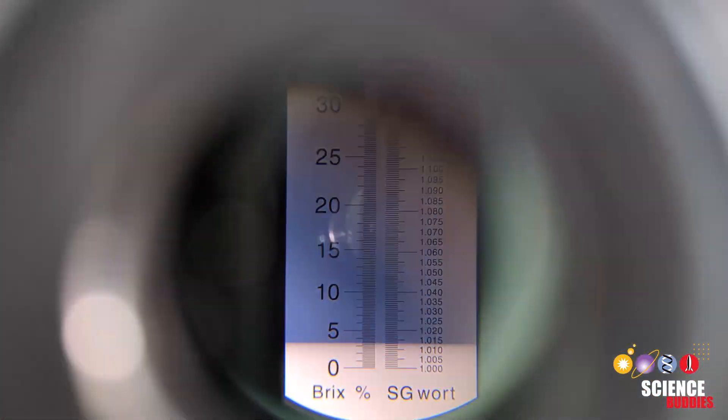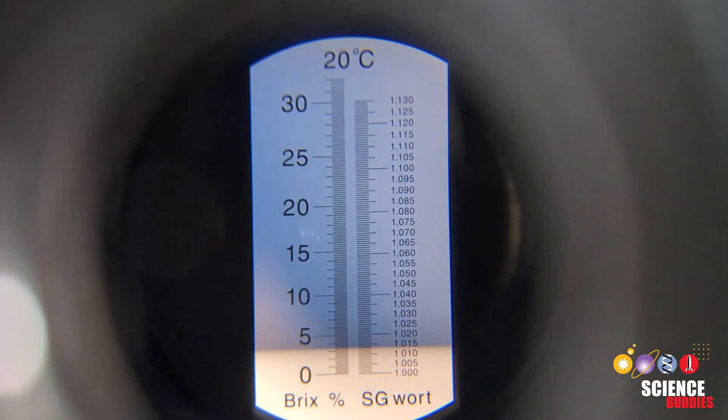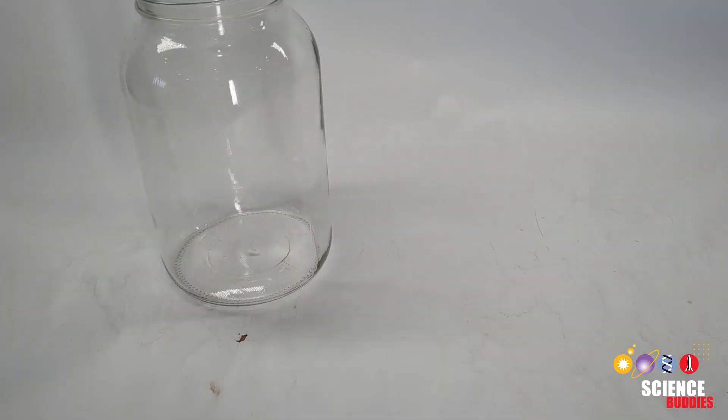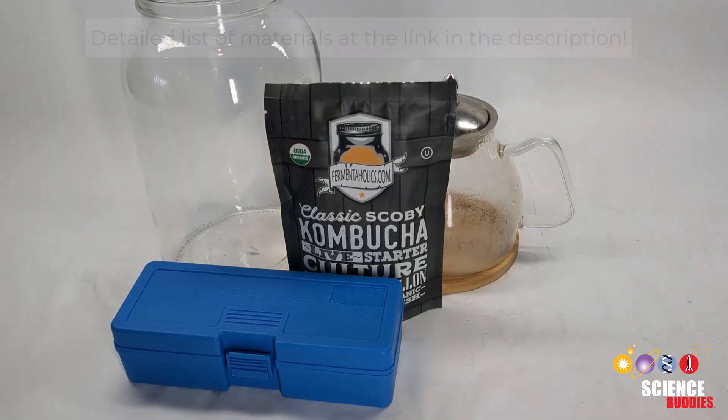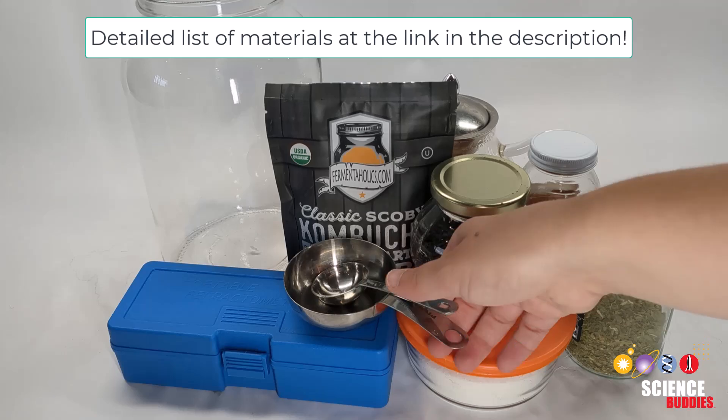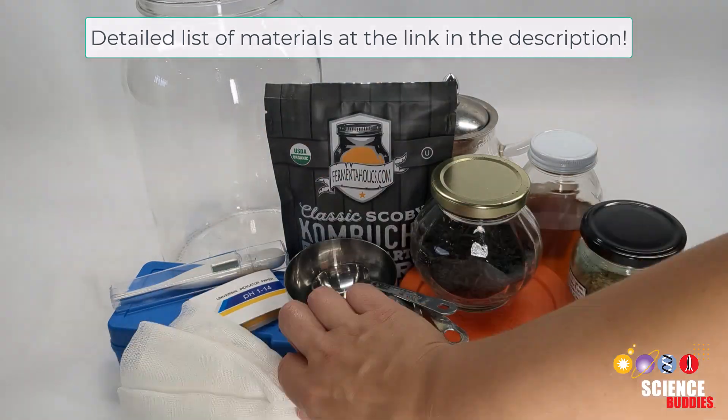In this science project, you'll investigate what sweetener and tea the biofilm prefers to use. To make your kombucha solution and test its biochemistry, you will need a few materials. Check out our full materials list at the link in the description.